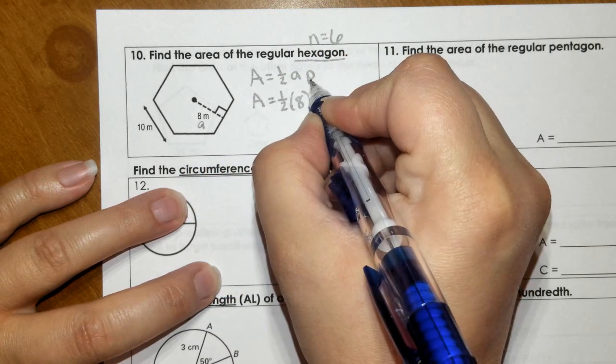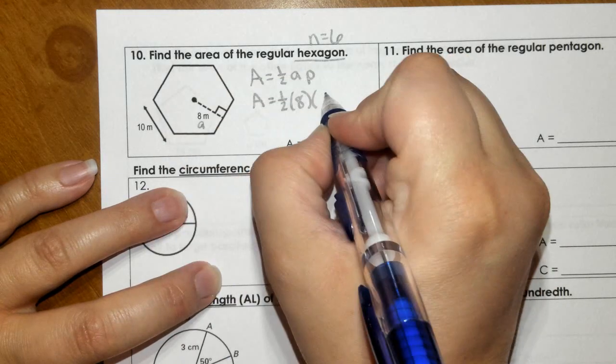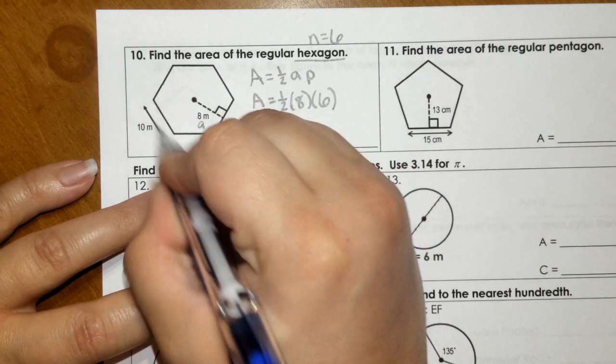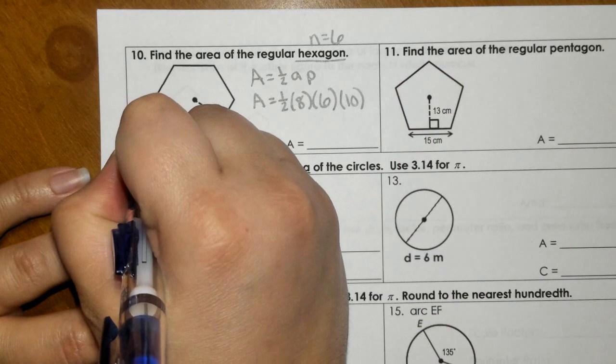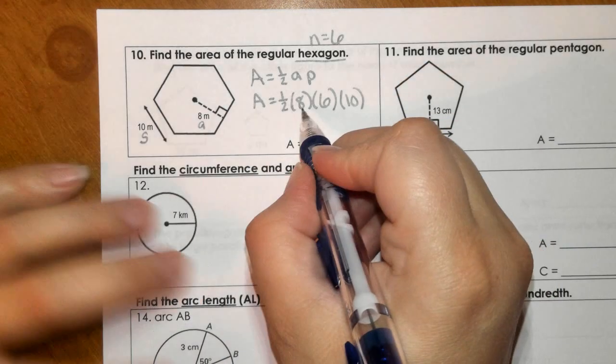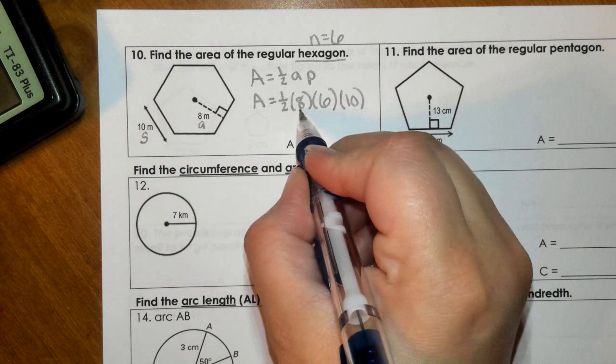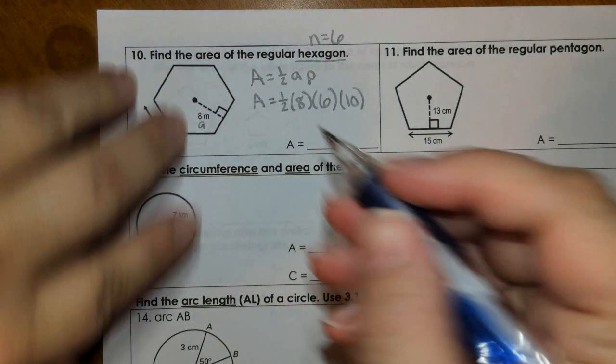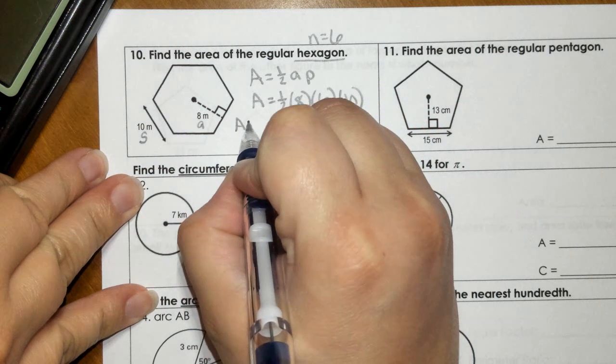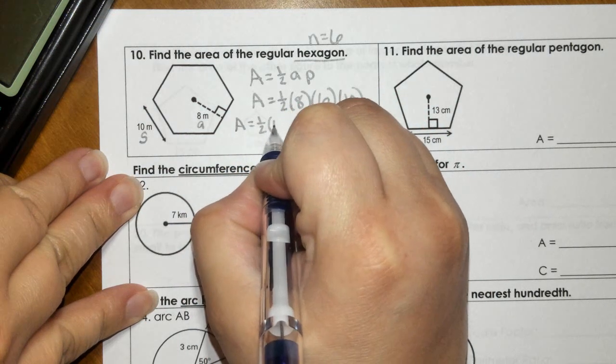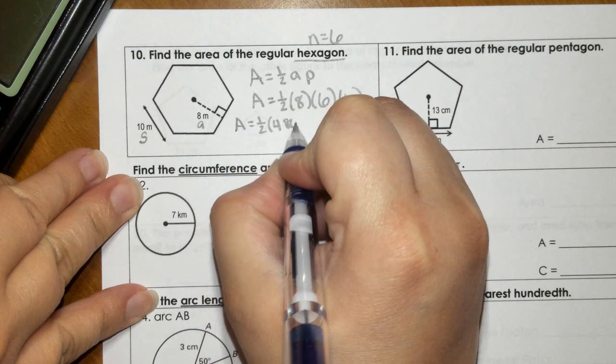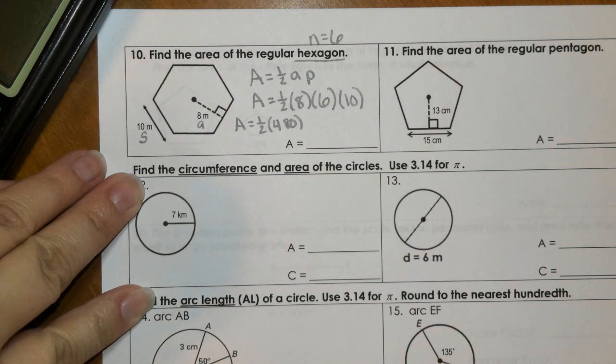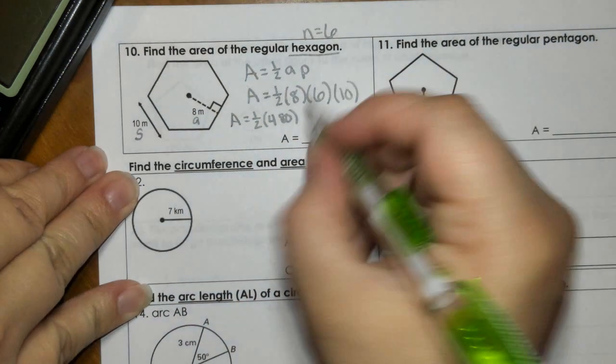So to satisfy our formula here, we would say that the apothem is 8. The perimeter is 6 sides, so 6 times the side length of 10. This is your S for side length. So I would multiply all of these together, 8, 6, 10, and that would give me 480. And if I take half of that, we get 240.